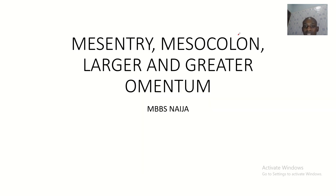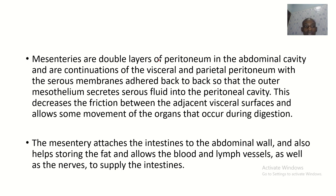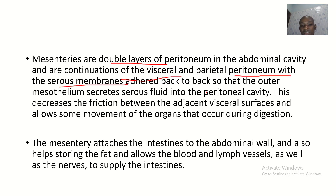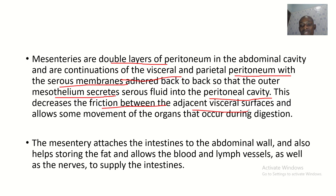Our lecture today is mesentery, mesocolon, and the lesser and greater omentum. Mesenteries are double layers of peritoneum in the abdominal cavity, and they are continuations of the visceral and parietal peritoneum. Their serous membranes secrete serous fluid into the peritoneal cavity, which decreases friction between the visceral surfaces and allows some movement of the organs.